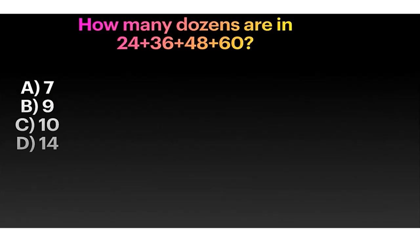The first question is, how many dozens are in 24 plus 36 plus 48 plus 60? We know that 1 dozen is 12. There are two 12s in 24, so there would be 2. 12 times 3 is 36, so it would be 3.